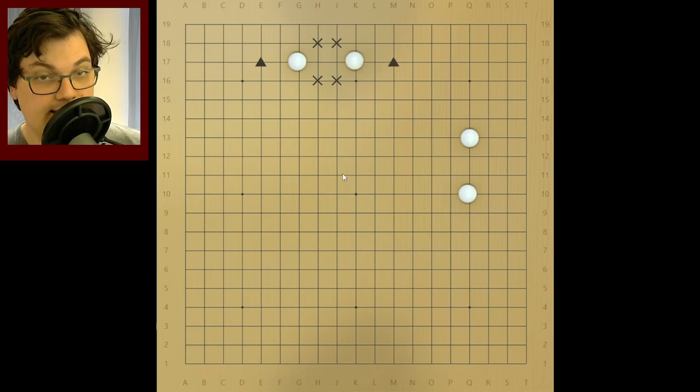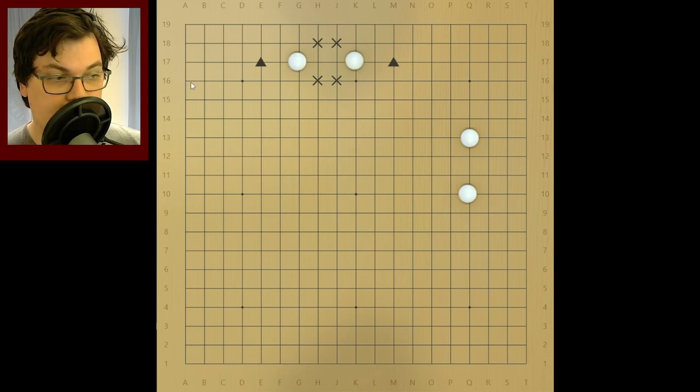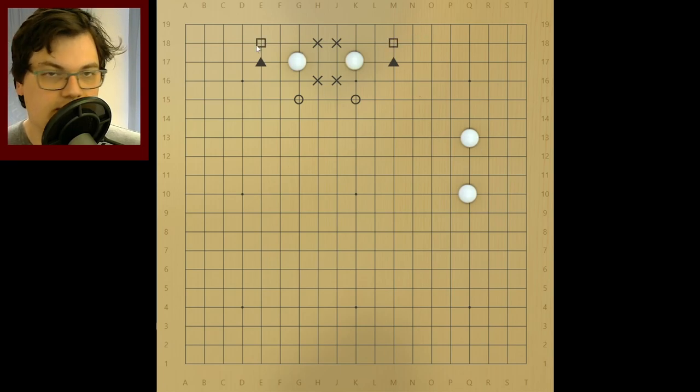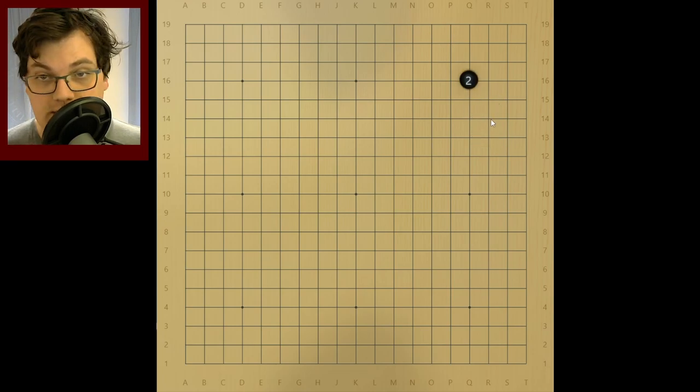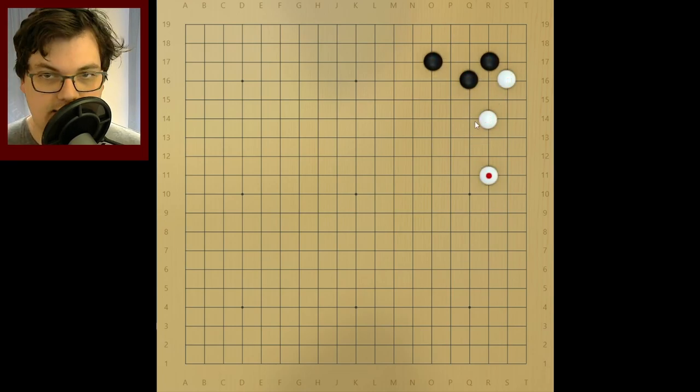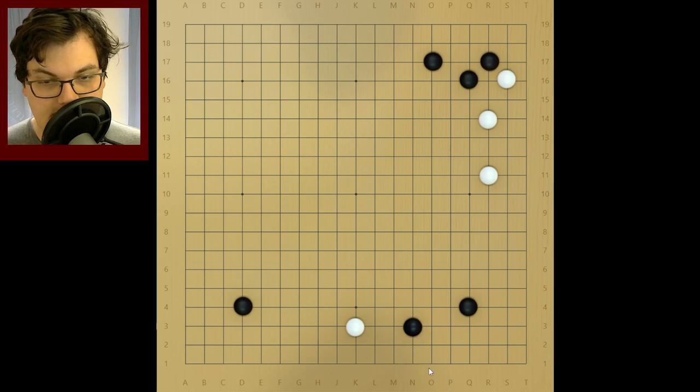So a base can't really be attacked unless it has both these points covered. White has these living moves. White has these here. So these are common moves here to start trying to live. A common way to get a two-space base is like this. This is how you can get a two-space base. We have this position here. Black kind of tries to attack and then you make your two-space base.